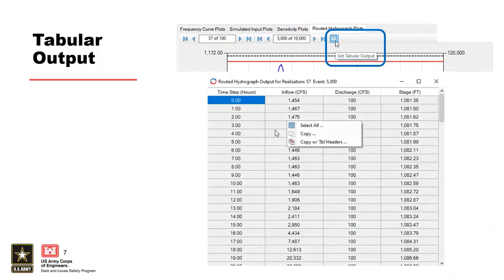When you're toggling through each of the routed hydrographs, tabular output for the inflow, outflow, discharge, and reservoir stage can be accessed by selecting the tabular output button. This allows you to copy and paste into a spreadsheet or some other program.